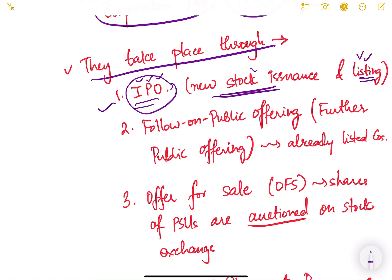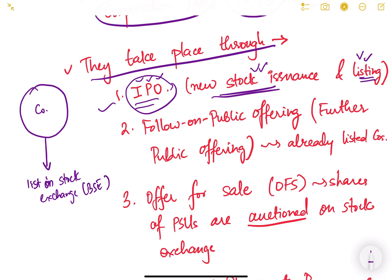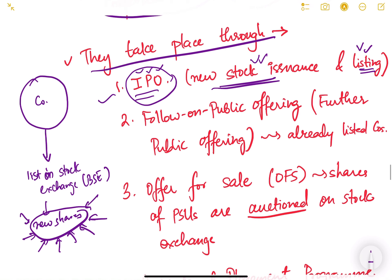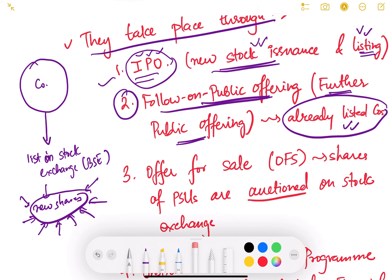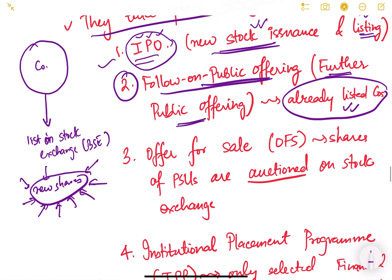How does minority disinvestment take place? The first method is through an IPO — Initial Public Offering — meaning the first time the company is listed on the stock exchange. We will study this in depth when we cover financial markets. When a government company that was not previously listed gets listed on the stock exchange, such as the Bombay Stock Exchange (BSE), new shares are issued and people can buy these shares and become part-owners of the company.